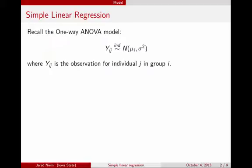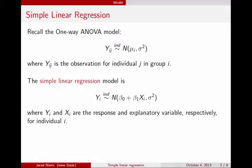Now we're switching over. Rather than just separating observations by groups, we're going to separate observations by some explanatory variable value that's continuous. The model that we're going to be using is called the simple linear regression model.